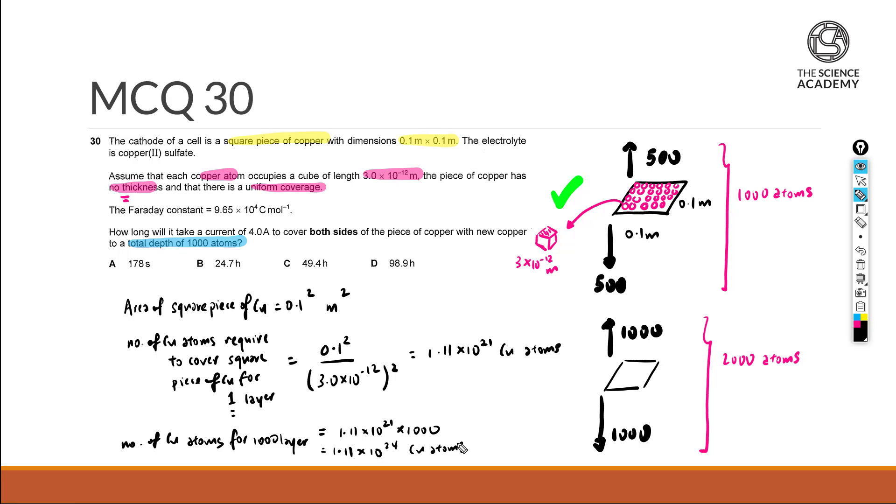And with that being said, we want to find out the number of moles because we are trying to relate to Q = It. So first thing first, the number of moles of copper atoms of such an amount will then be 1.11×10^24 divided by our Avogadro's constant of 6.02×10^23. So to round it to 4SF we will be able to get 1.846 moles of copper atoms are actually required.